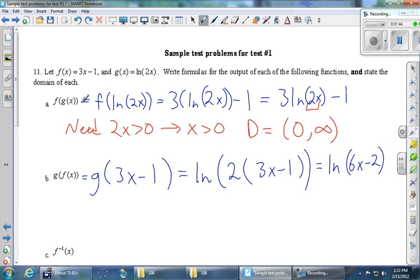And same idea as the domain issue up above, we need to make sure that the stuff inside the log is bigger than 0. So we make 6x minus 2 bigger than 0, add 2, and divide by 6. Then we get x is bigger than a third. So the domain of this one is all the numbers bigger than a third, not equal to a third.